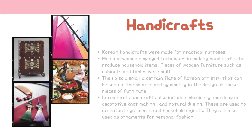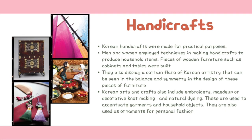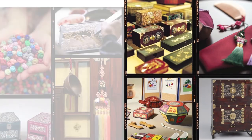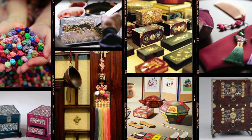Korean handicrafts were made for practical purposes. Men and women employed techniques in making handicrafts to produce household items. Pieces of wooden furniture such as cabinets and tables were built, displaying a certain flair of Korean artistry seen in the balance and symmetry of their design. This balance and symmetry are also observed in other handmade items such as woven baskets, boxes, and mats made of bamboo and ligamous plants such as wisteria and lesbida. Korean arts and crafts also include embroidery, decorative mount making, and natural dyeing, used to accentuate garments, household objects, and personal fashion.